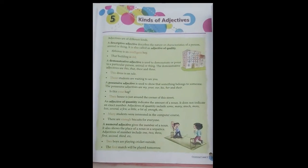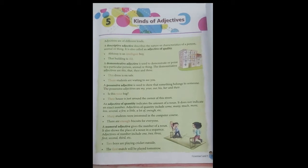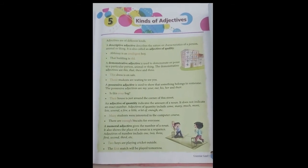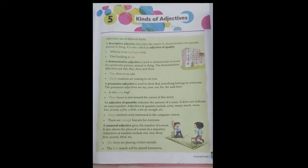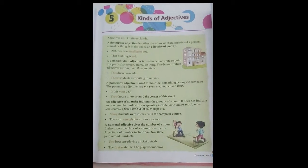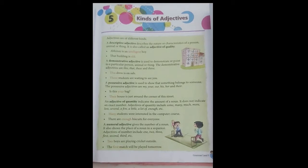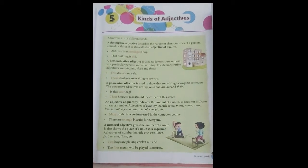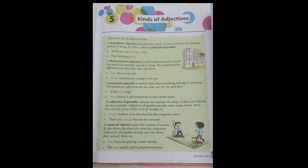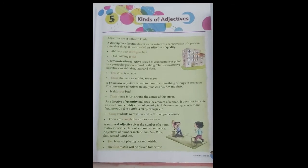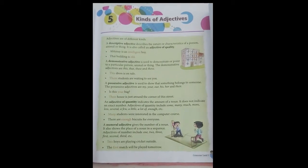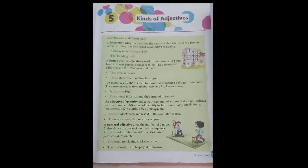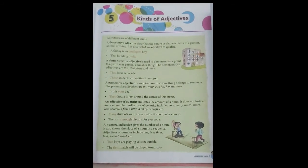An adjective of quantity — by the term quantity, we can understand it indicates the amount. It does not indicate the exact number. An adjective of quantity includes: some, many, much, more, less, several, a few, a little, a lot, or enough. It describes the quantity of a noun or pronoun and it cannot be counted. If we question with 'how much' or 'how many', we get the answer of an adjective of quantity. For example: 'Many students were interested in the computer course.' 'There are enough biscuits left for everyone.'